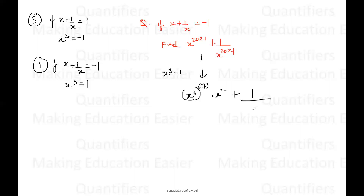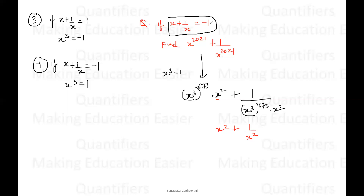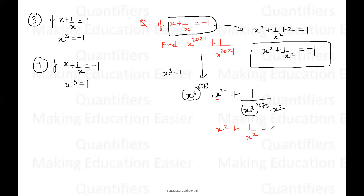So now ultimately we need to find X squared plus one by X squared. We know the equation given in the question: X plus one by X is equal to negative one. To find X squared plus one by X squared, we just square both sides. Squaring both sides: X squared plus one by X squared plus two times X times one by X equals square of minus one. Two times X times one by X is plus two, and the square of minus one is one. So X squared plus one by X squared equals negative one. And negative one is our answer.